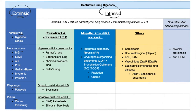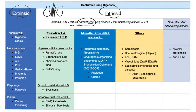Intrinsic is divided into two main groups. Number one: diffuse parenchymal lung disease, where the problem is in the interstitial tissue between the alveoli — this is called interstitial lung disease. Or it could be non-interstitial, meaning inside the alveoli, including alveolar proteinosis and anti-glomerular basement membrane antibody disease, also known as Goodpasture syndrome. The parenchymal lung disease is then divided into three categories: occupational and environmental, idiopathic interstitial pneumonia, and others.